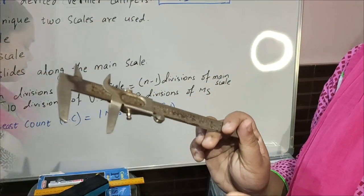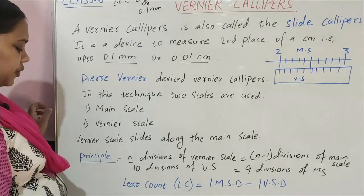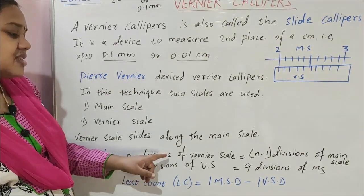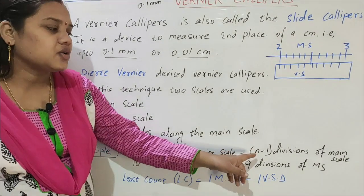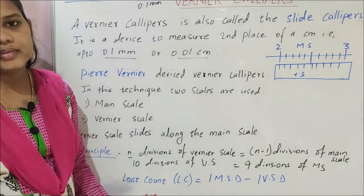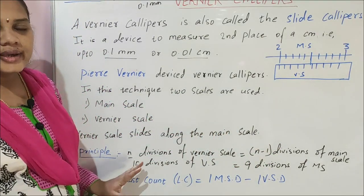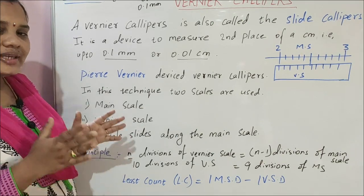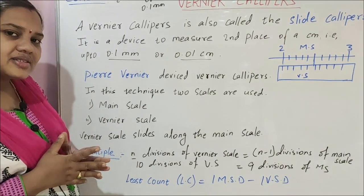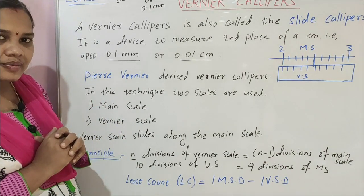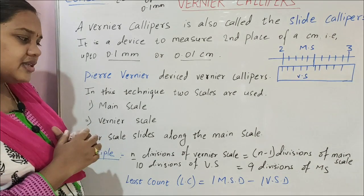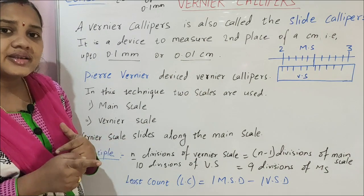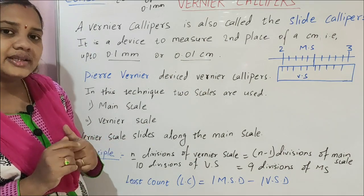The principle of vernier scale is: n divisions of vernier scale is equal to n minus 1 divisions of main scale. In the vernier scale there are generally 10 divisions, so 10 divisions of vernier scale equal to 9 divisions of main scale.